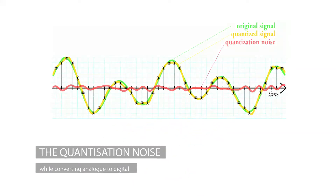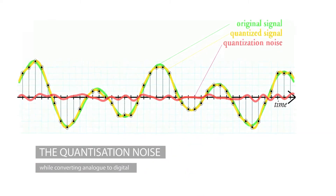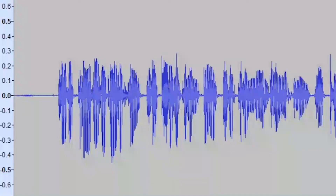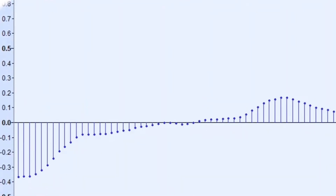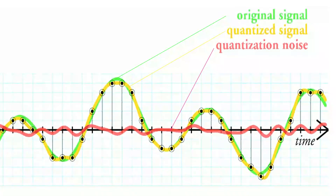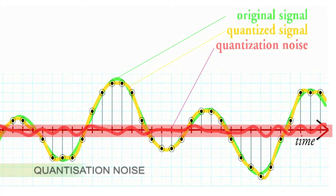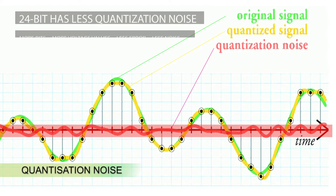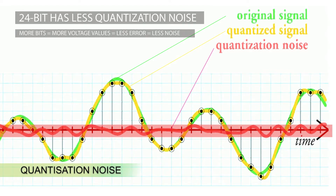The only real difference between a 24-bit recording and a 16-bit recording is something called the quantization noise. A continuous analog signal, when converted to discrete digital voltage samples, will introduce a certain approximation error called the quantization error. This error voltage is treated as a noise source and is output as the quantization noise. This noise is constant for a broad-spectrum analog input like our audio signal and depends only on the bit depth of the analog-to-digital converter.